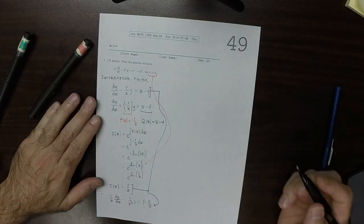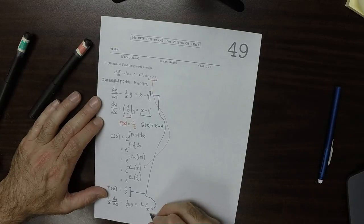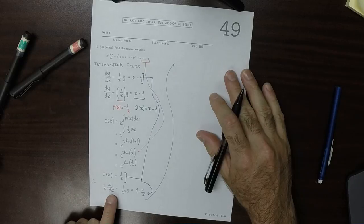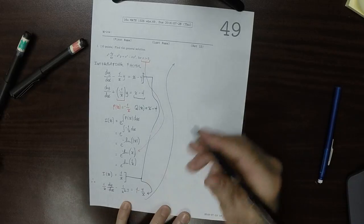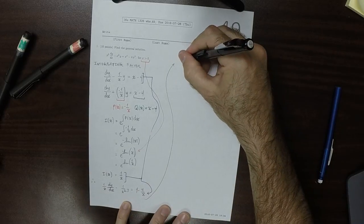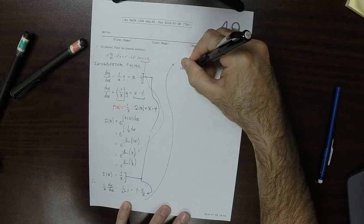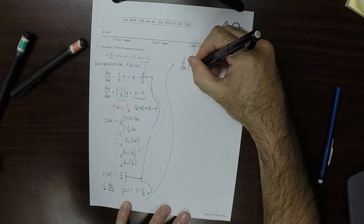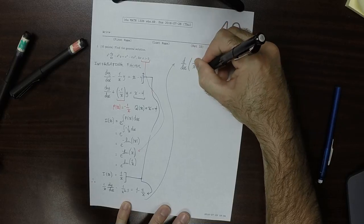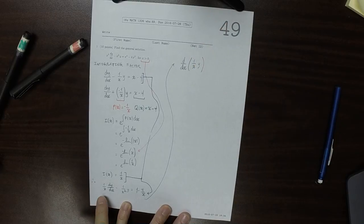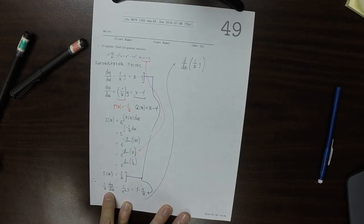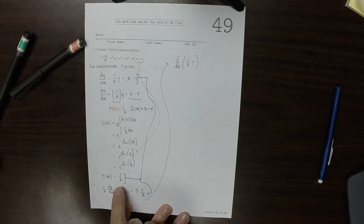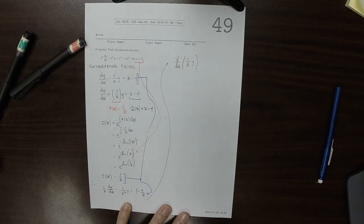So, notably, taking the left-hand side of this differential equation, that is the result of the product rule. So that's d dx of 1 over x y. Because that is 1 over x times the derivative of y, and then plus the derivative of 1 over x is negative 1 over x squared, and then multiplied by y.